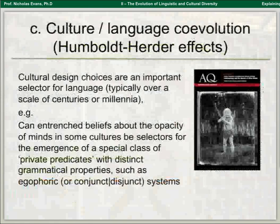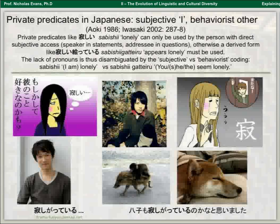Let's look at a particular phenomenon in Japanese: private predicates. In English, if I say 'I'm lonely', 'you're lonely', 'she's lonely', we use exactly the same expression. If we translate that into Japanese, sabishii can only be used if you have direct subjective access to a state — you can subjectively vouch for the loneliness. On the other hand, if I'm talking about someone else, I have to say sabishii kateru — 'gives outward signs of being lonely', or 'appears lonely'.